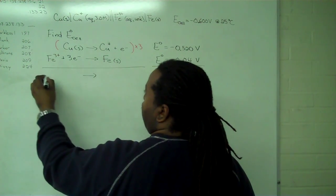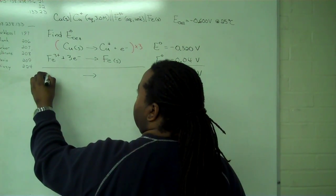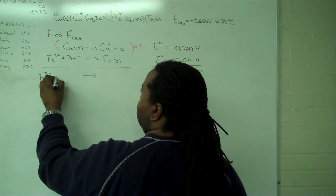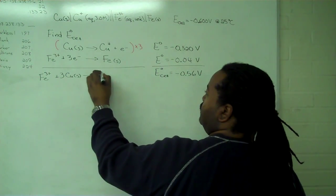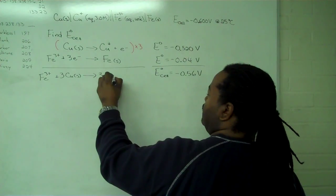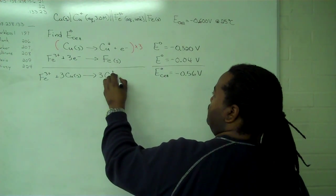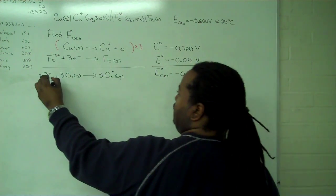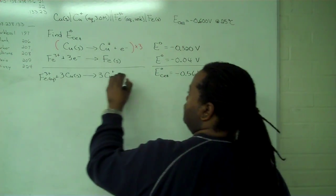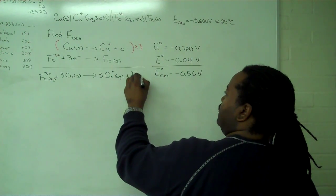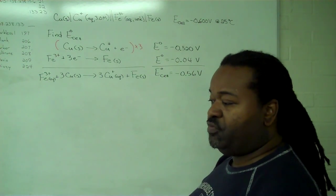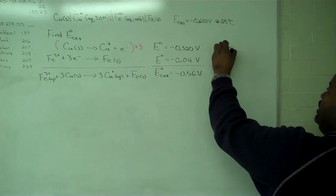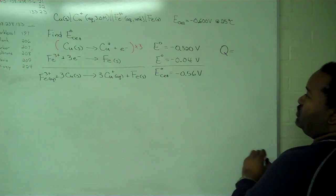And our overall reaction then is iron 3 plus, plus 3 copper, yields 3 copper 1 ions and our ions are all in solution and solid iron. So with this information,